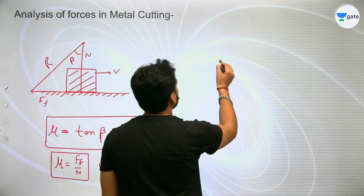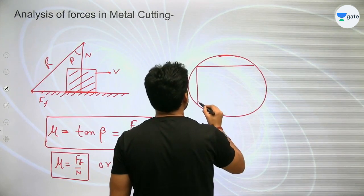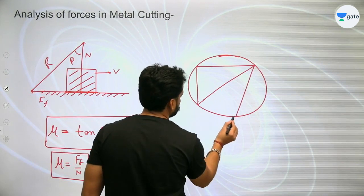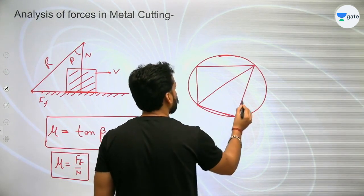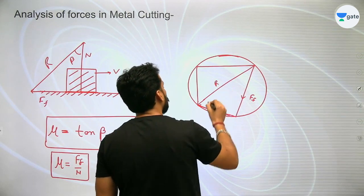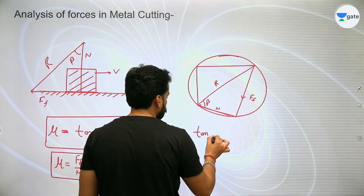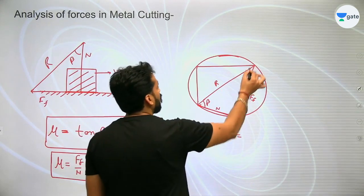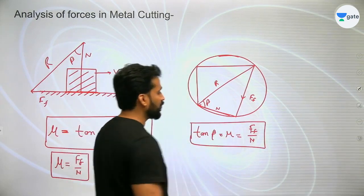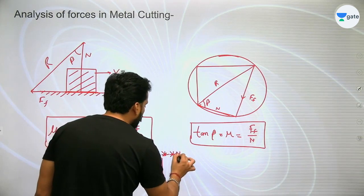So our Merchant Circle Diagram — this was it, friends. Here was FF, and this was N, and this was R. This angle was beta. So from here also beta is clearly known. If I find tan(beta) — which we also call mu — then tan(beta) = FF/N. So friends, remember from today: coefficient of friction is tan(beta).